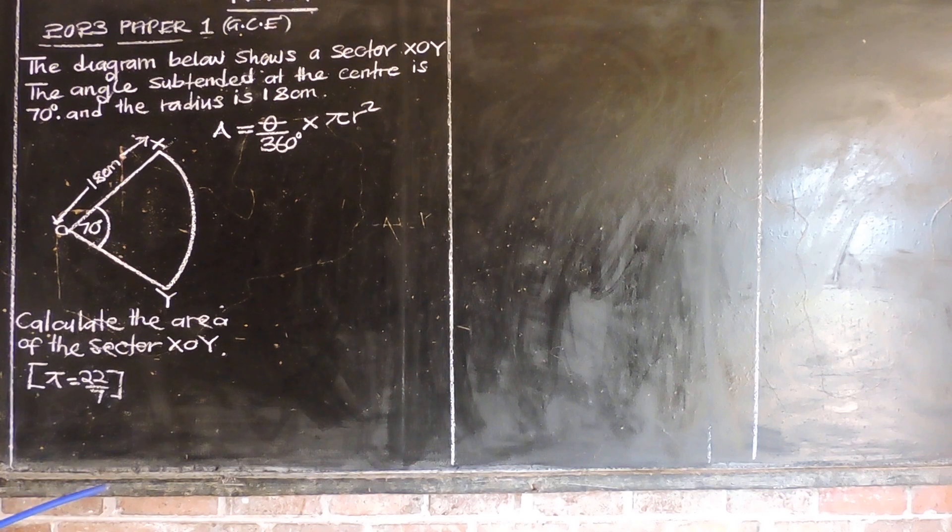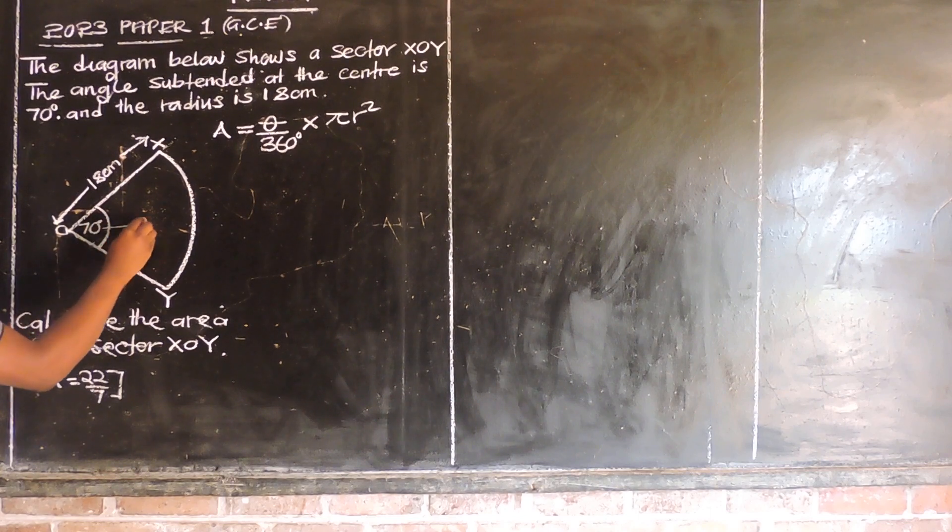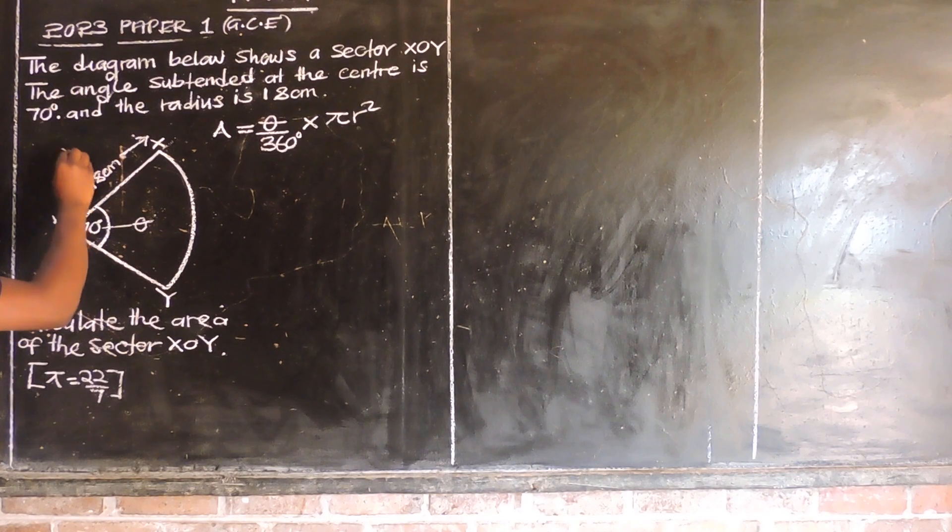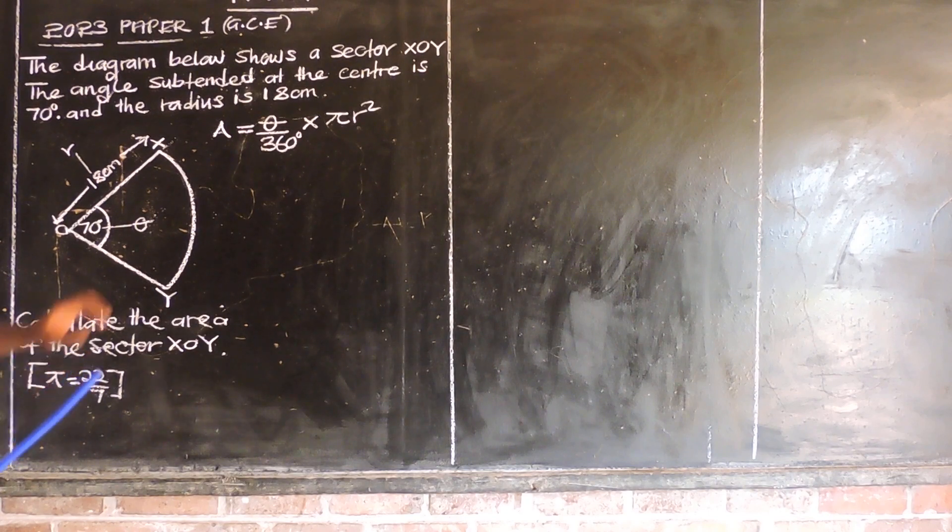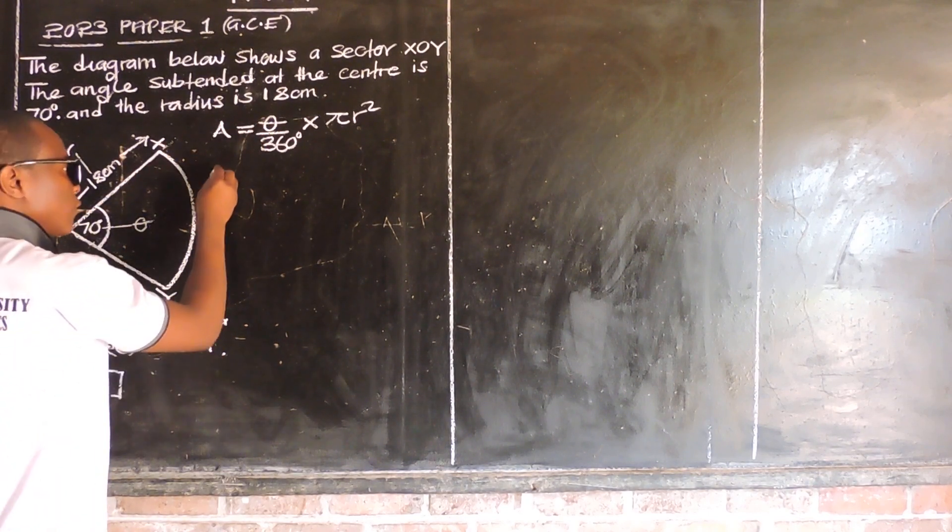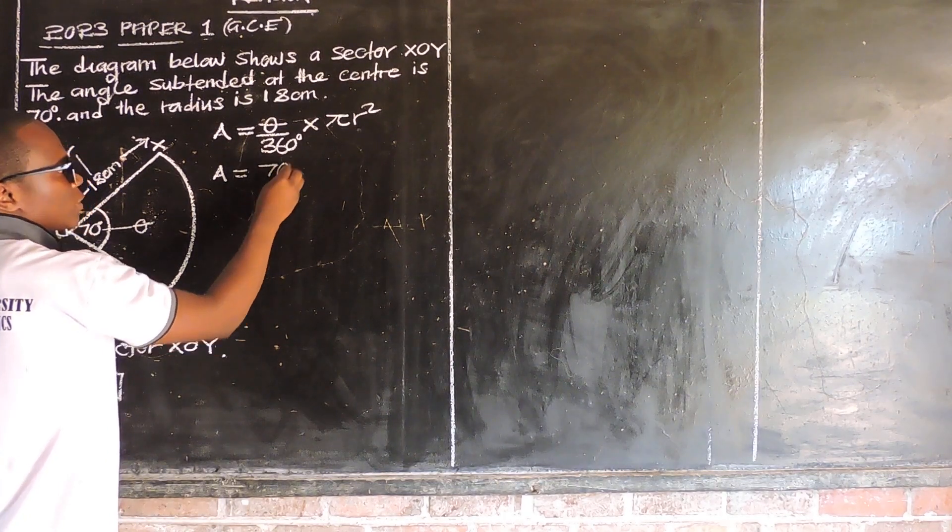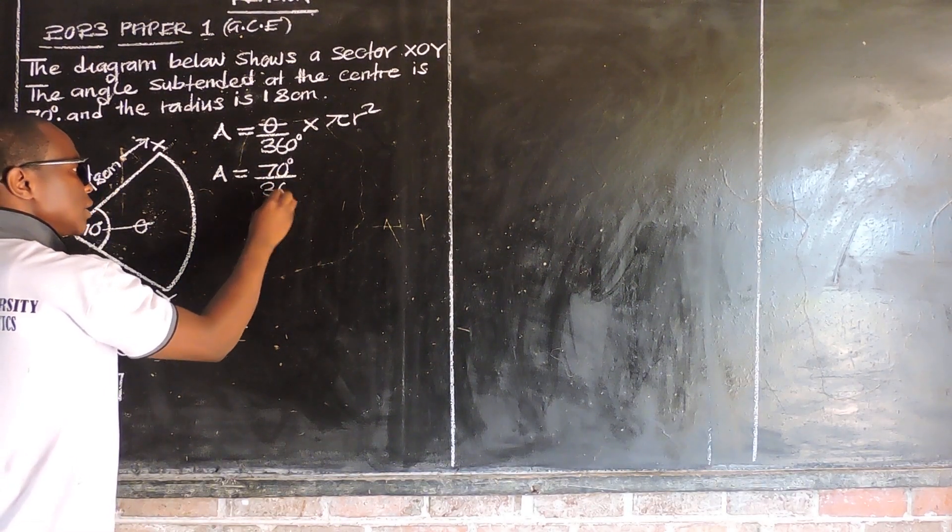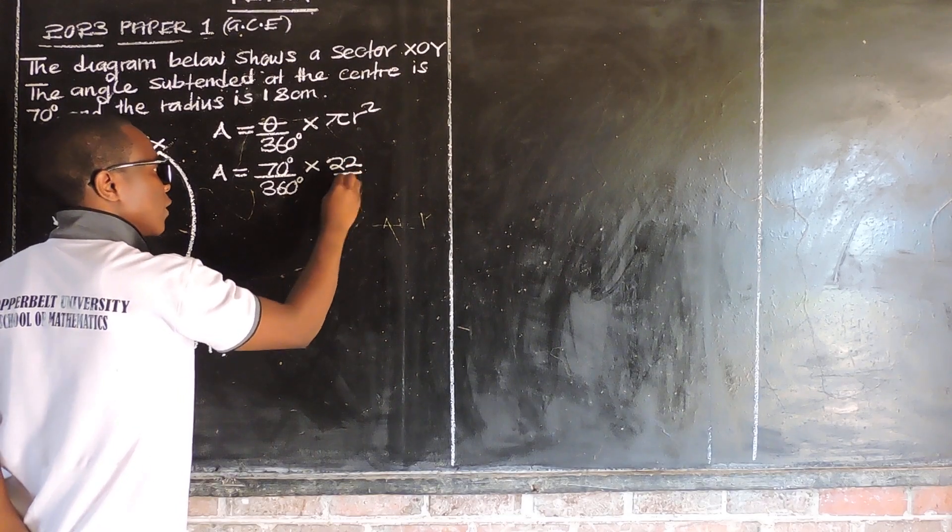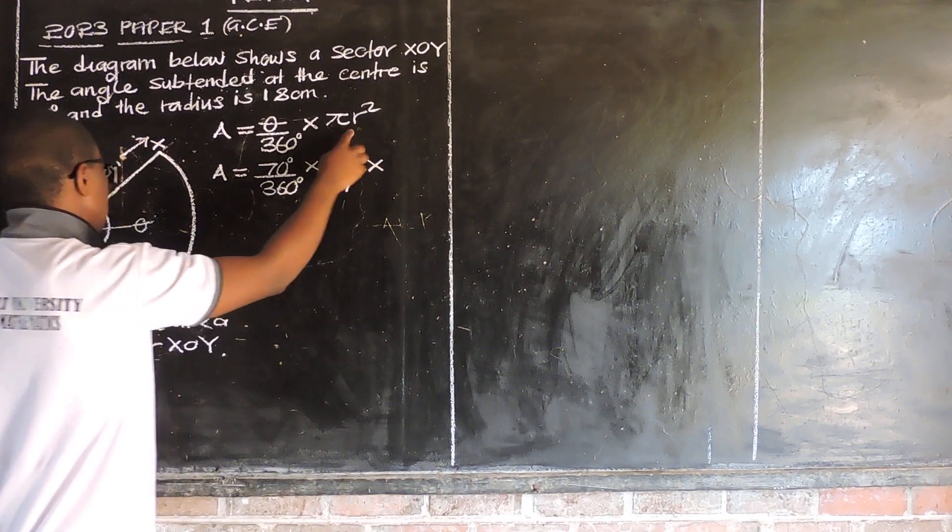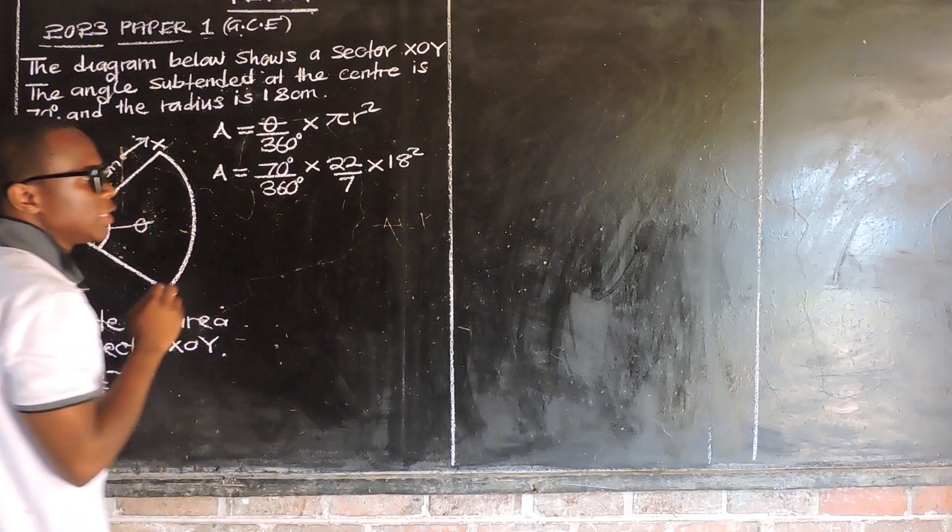So this is the formula we use. Area is equal to theta over 360 multiplied by pi times radius squared. So just a matter of substituting in this formula. The theta has been given, our theta is 70 degrees. And then the radius has also been given to be 18 centimeters. And the pi is 22 over 7.